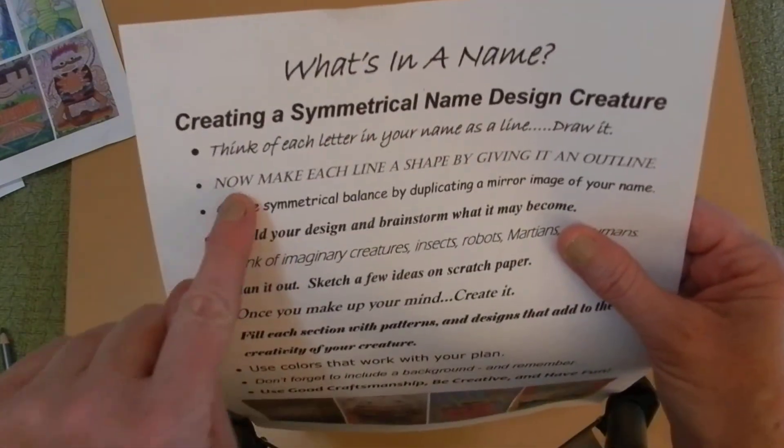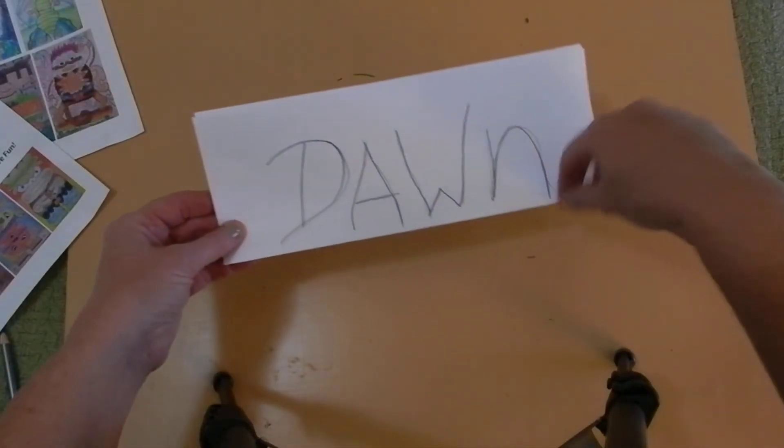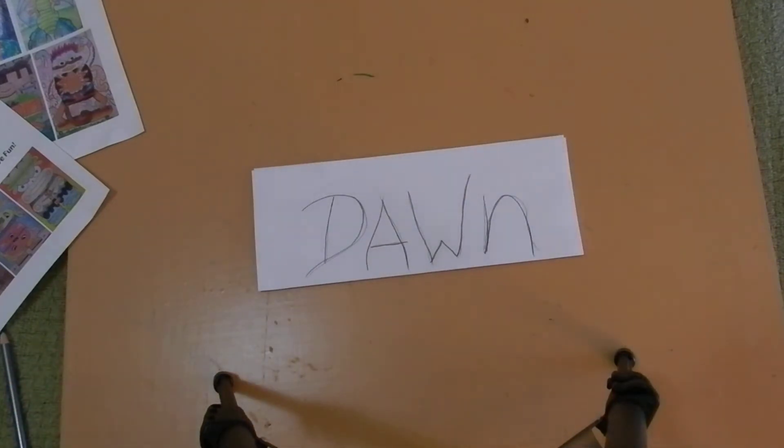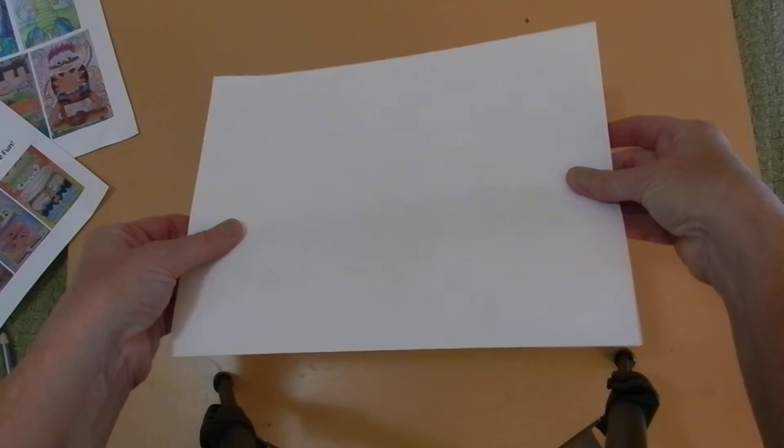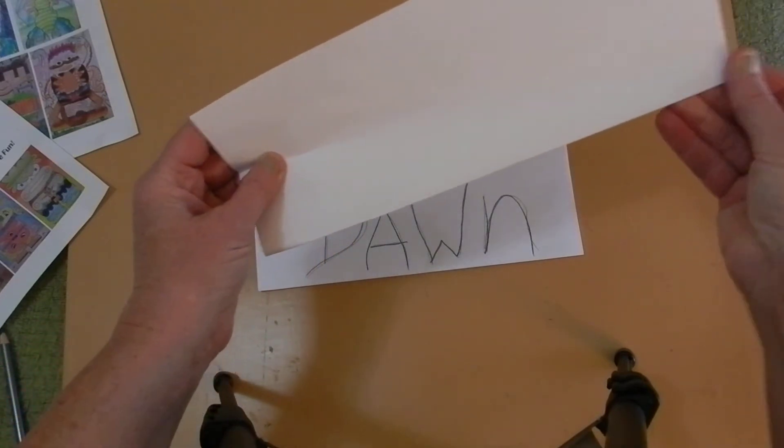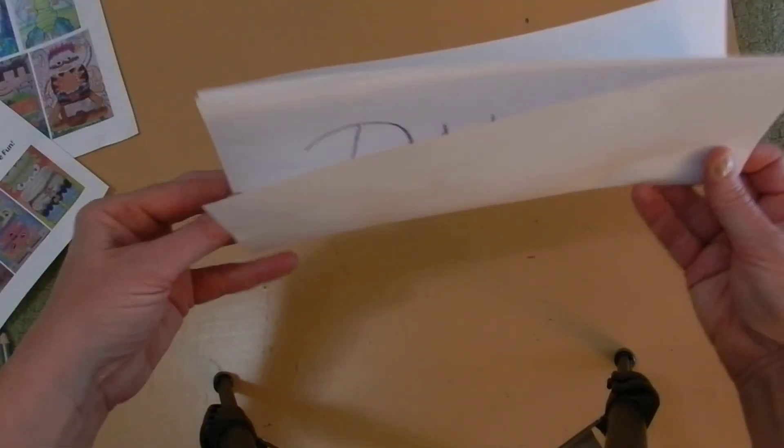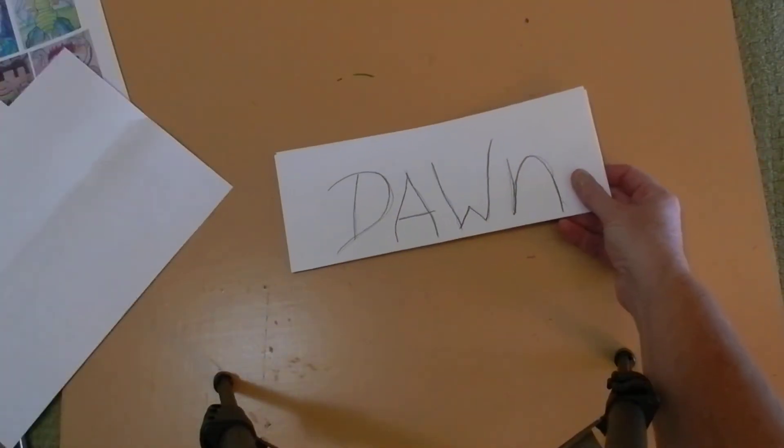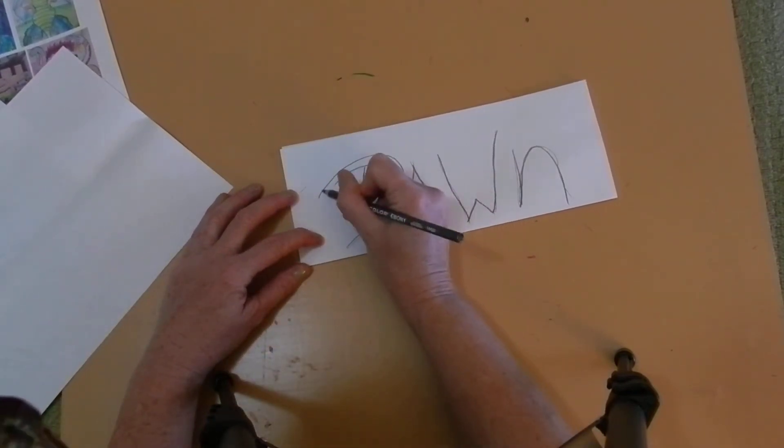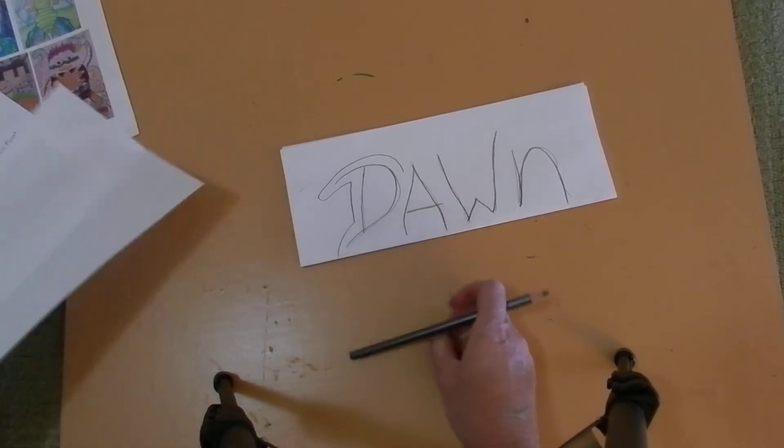Step two: Make each line a shape by giving it an outline. Now I did this very dark and because I don't want this big dark line to show on my demonstration, I'm going to go ahead and fold another sheet and just trace around the letters. And this is just for me more than you.